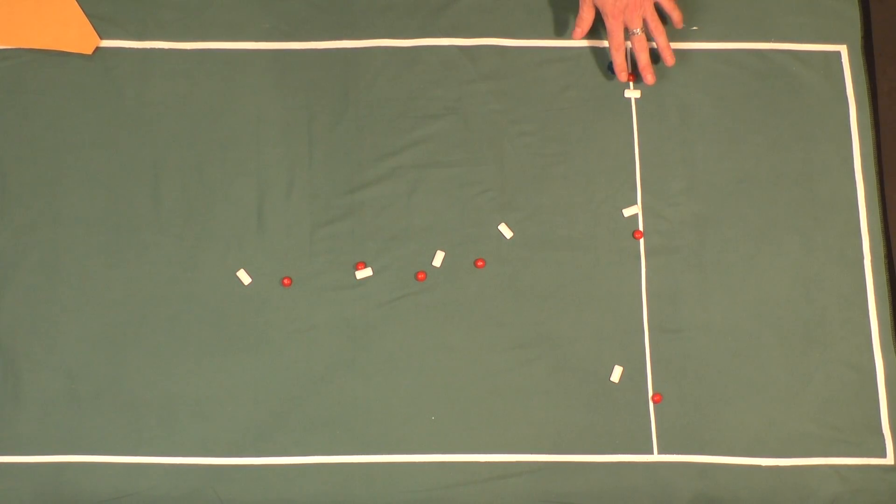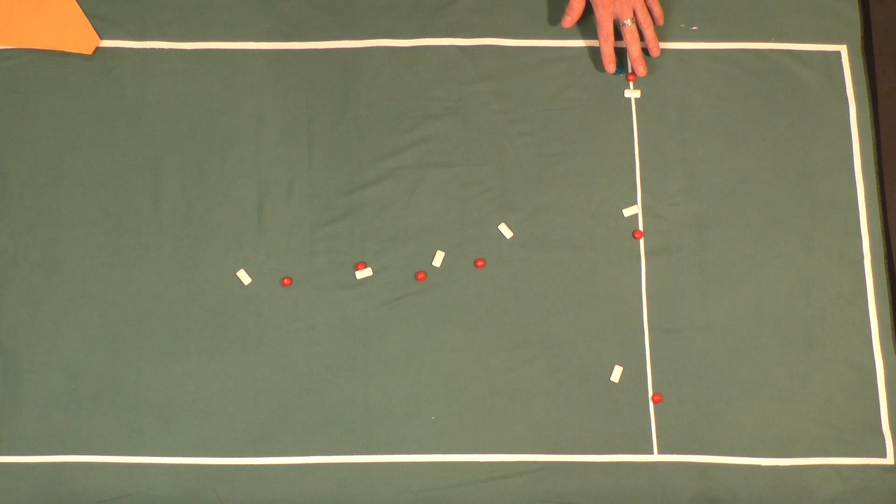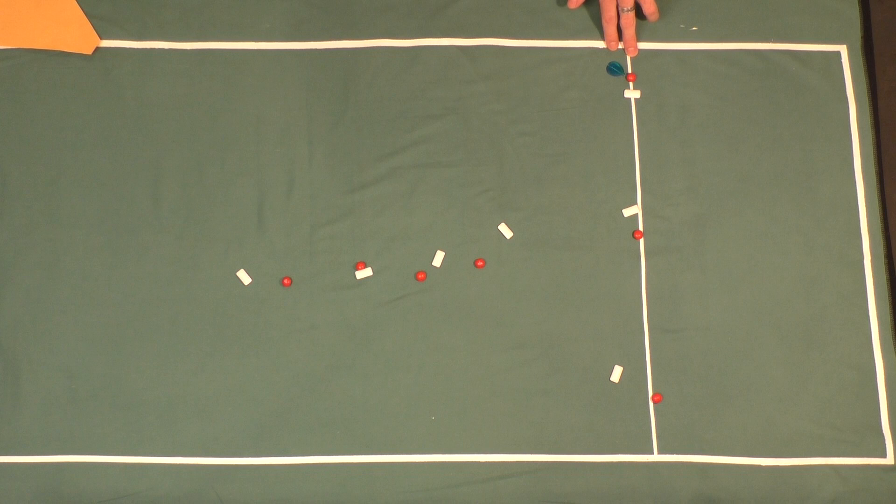When the offense possesses the disc near the sideline we're forcing towards, we'll often want to apply a sideline trap.